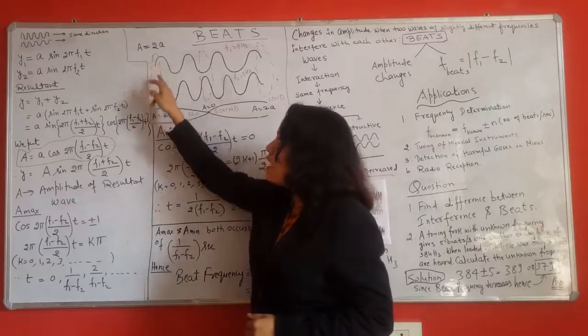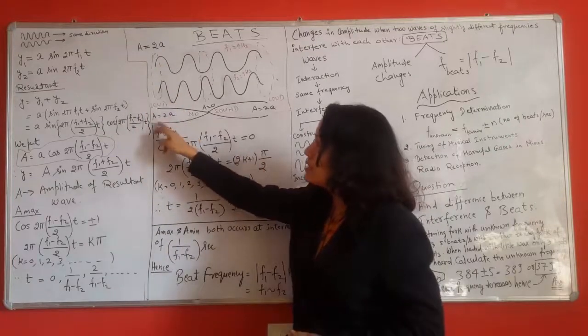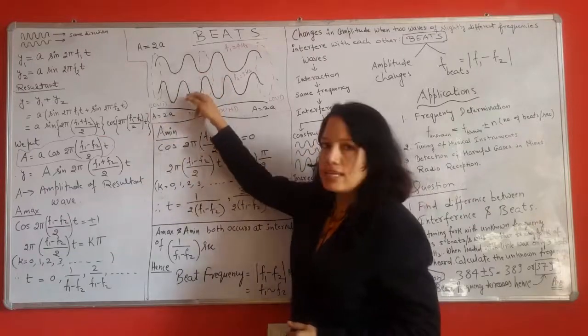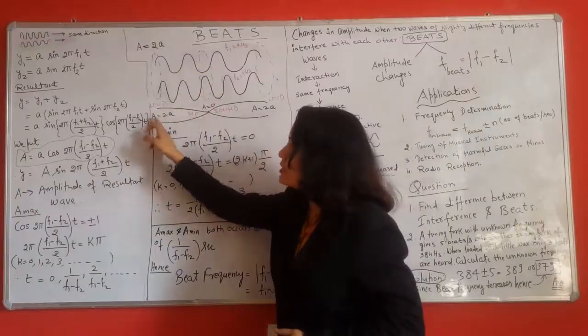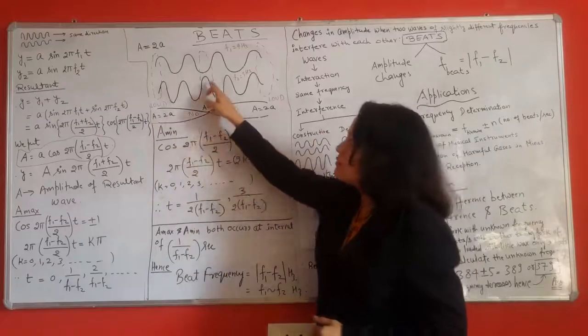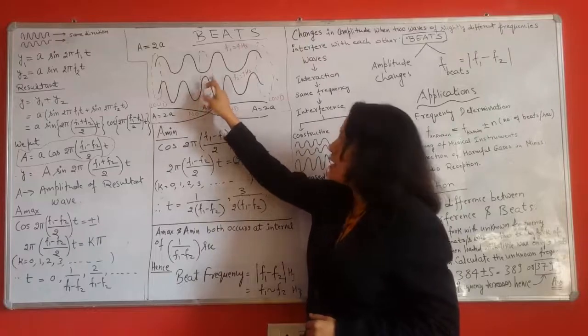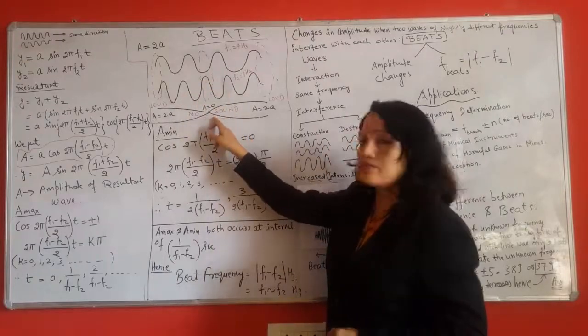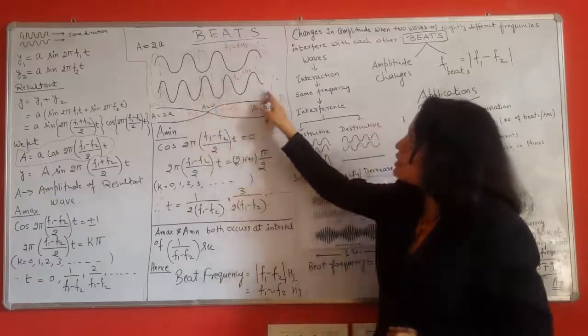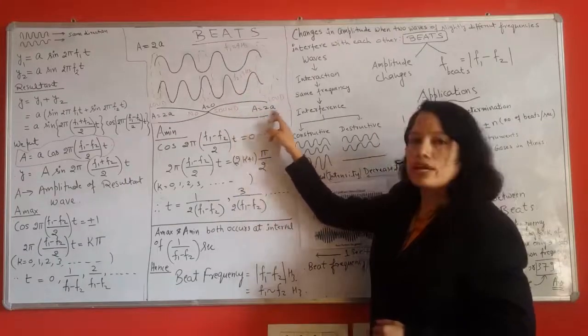It means that both the waves are exactly in phase, hence the resultant amplitude is maximum. Since the amplitudes are equal which is equal to small a, hence the resultant amplitude is twice of small a. Now at this second point the waves are interfering destructively because they are completely out of phase. Hence the resultant amplitude is difference of the amplitude of individual waves which is equal to 0. Again at this point both are interfering constructively and hence the resultant amplitude is twice of a.